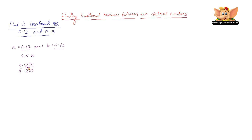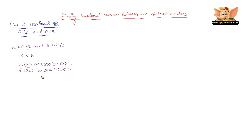To make these numbers irrational, we add a few more random digits and ensure they do not repeat or terminate. We can randomly write additional digits after 0.1201 and 0.1210, and we can clearly see that neither of them are repeating nor terminating, making them irrational.